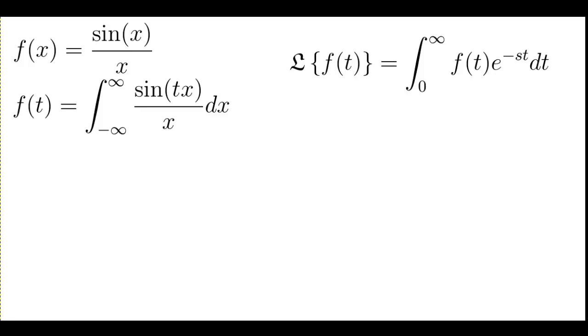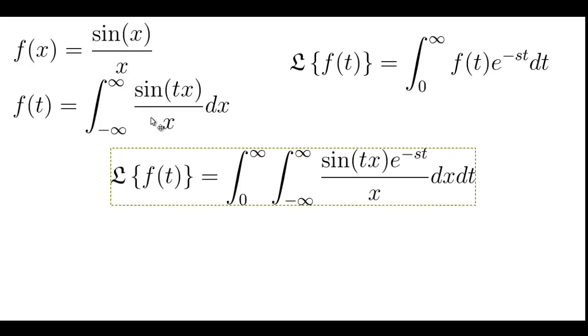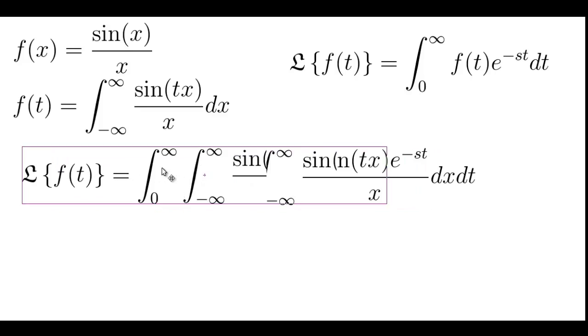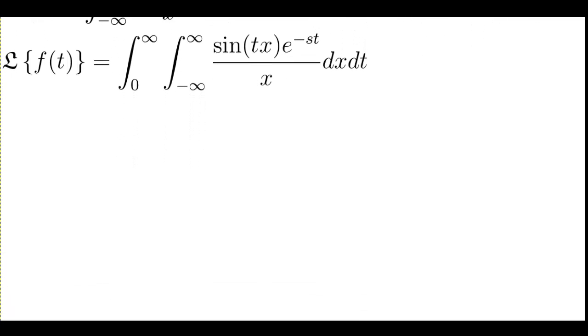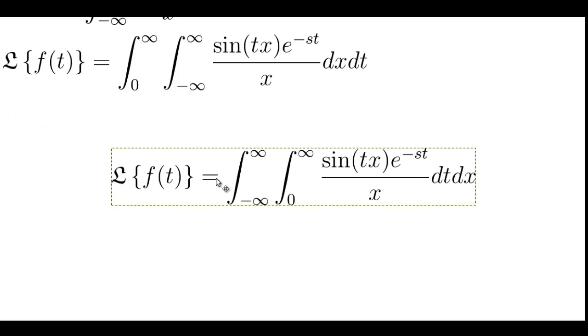What we need to calculate is the following. We have applied the Laplace transform to f of t and we yield the double integral. We want to apply the Laplace transform first, so that means we're going to have to switch the order of integration, which we can do in this case. And that will yield us the following.